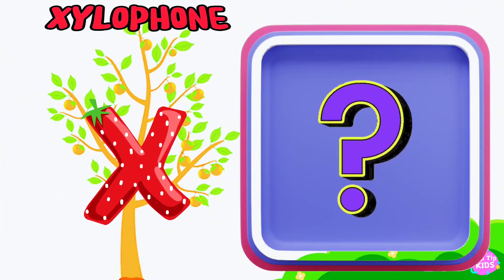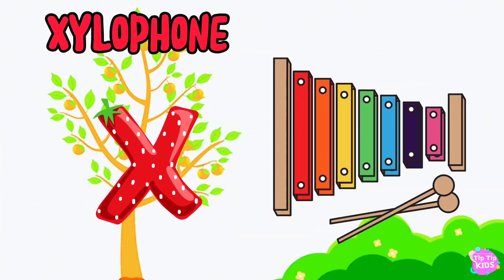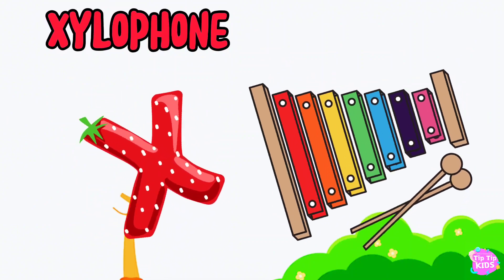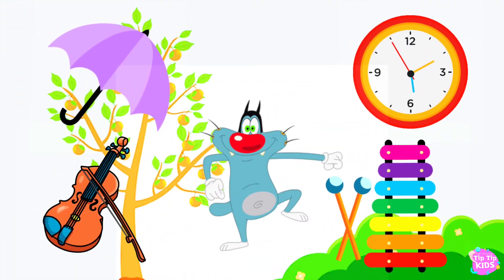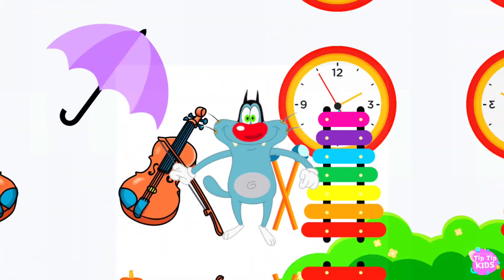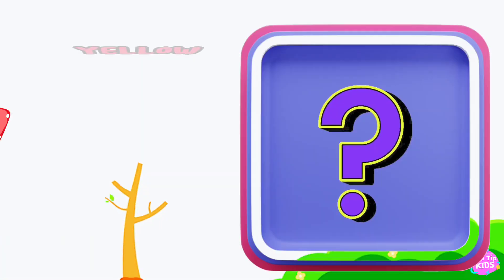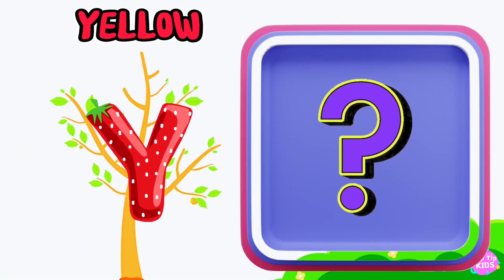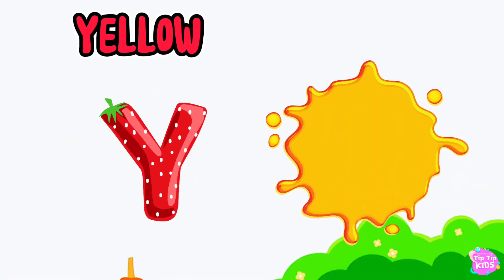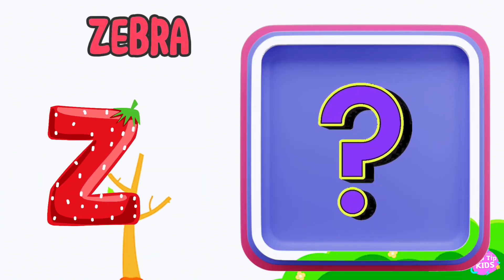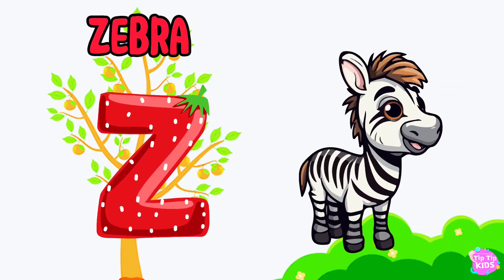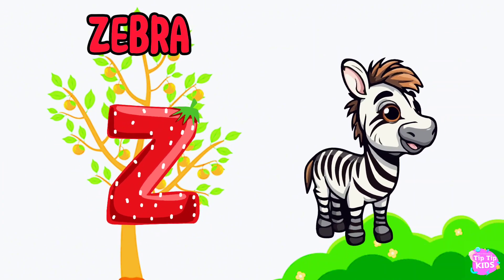X is for xylophone, z-z-xylophone. Y is for yellow, y-y-yellow. Z is for zebra, z-z-zebra.